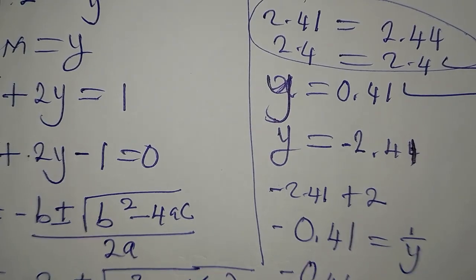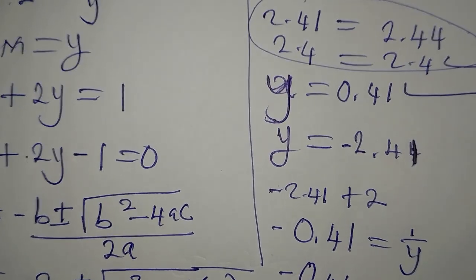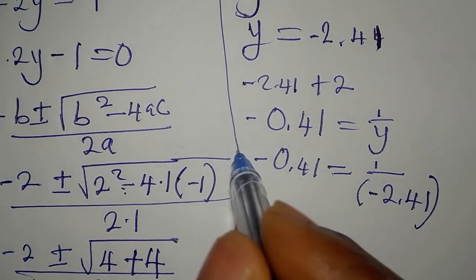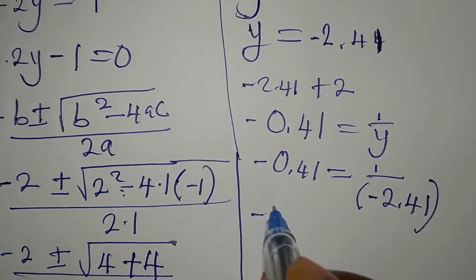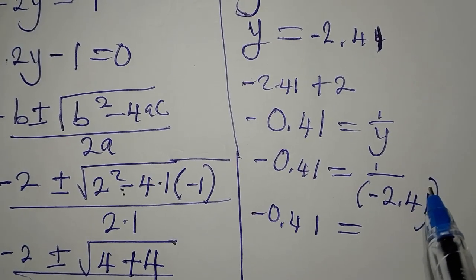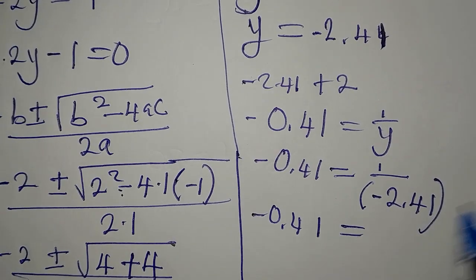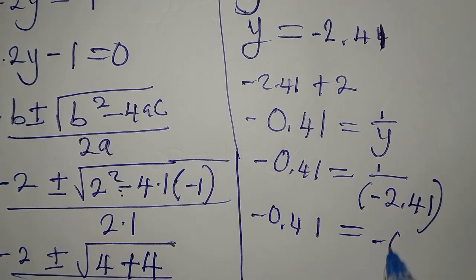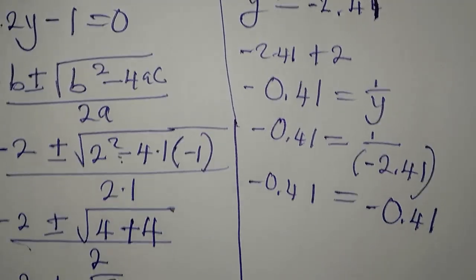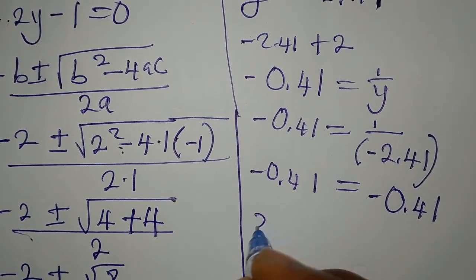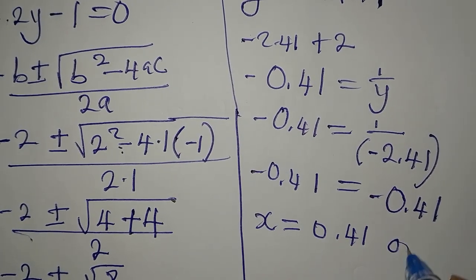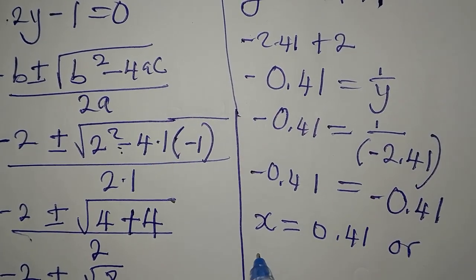Because that's the value of y we are using. If this is not equal to this, then we are wrong. So this is negative 0.41, then if you use calculator, 1 divided by negative 2.41 will give us negative 0.41 approximately.